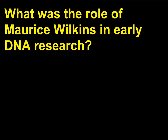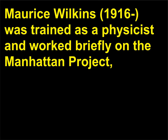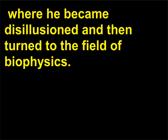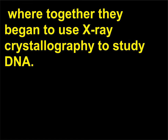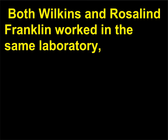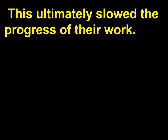What was the role of Maurice Wilkins in early DNA research? Maurice Wilkins, 1916, was trained as a physicist and worked briefly on the Manhattan Project, where he became disillusioned and then turned to the field of biophysics. He worked at King's College, London, with John Randall, where together they began to use X-ray crystallography to study DNA. Both Wilkins and Rosalind Franklin worked in the same laboratory, but their relationship was not one of cooperation, which ultimately slowed the progress of their work.